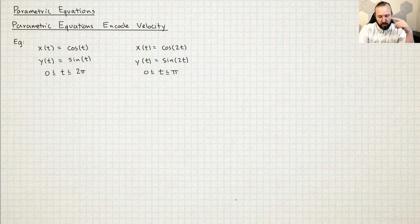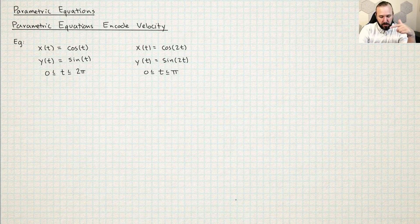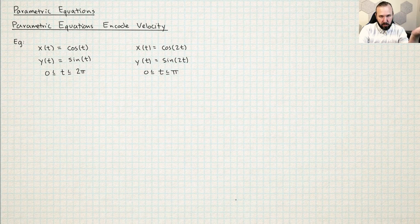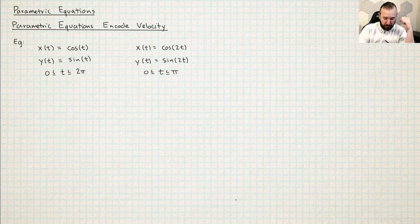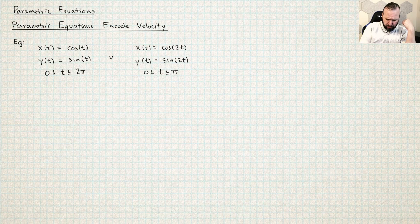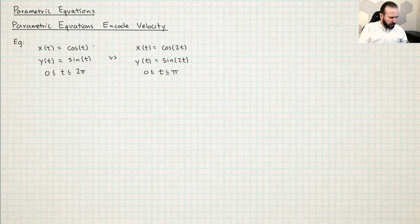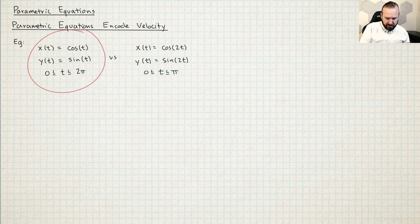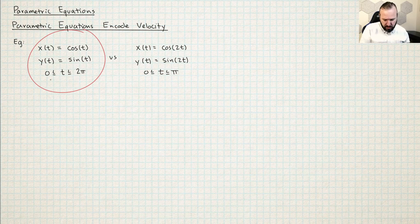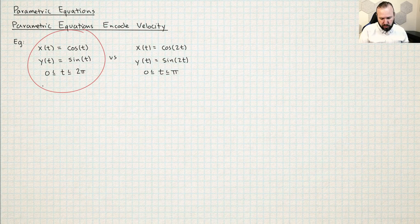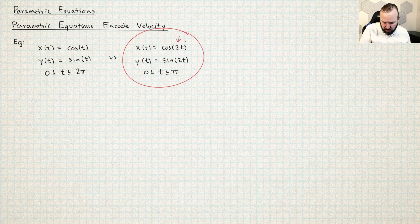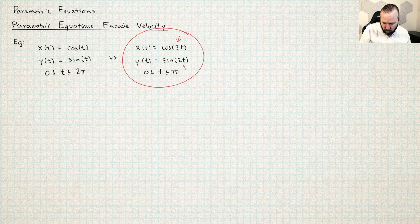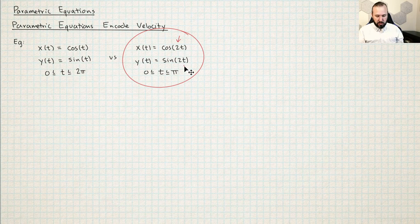Because we introduced the variable time, this allows us to encode the speed, the velocity of which a particle is moving. So I have two different parametric equations here. In the first one, x is cosine and y is sine and t is going to go between 0 and 2π. And in the second equation, x is going to be the cosine of 2t and y is going to be the sine of 2t.